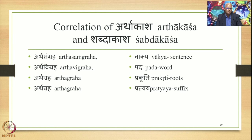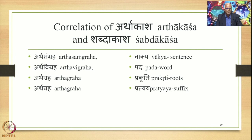The correlation of artha-kasha and shabda-kasha can be shown as follows: artha-sangraha in the artha-kasha is correlated with vakya, where vakya is cognized as one unit. Artha-vigraha corresponds with the pada or word in the shabda-kasha, where the vakya is dissolved in the form of padas. Then these padas are further divided into prakriti and pratyayas, and this is called artha-graha of prakriti (roots) and pratyaya (suffix). So artha-sangraha, artha-vigraha, and artha-graha are elements in the artha-kasha correlated with vakya, pada, prakriti, and pratyaya in the shabda-kasha.